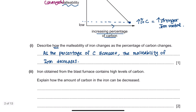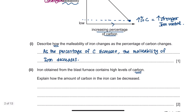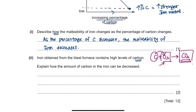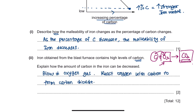Iron obtained from the blast furnace contains high levels of carbon. Since carbon is very reactive with oxygen, you can blow in oxygen gas so that carbon reacts with oxygen to form carbon dioxide. This carbon dioxide is then easily removed from the blast furnace as waste gas, reducing the amount of carbon inside.